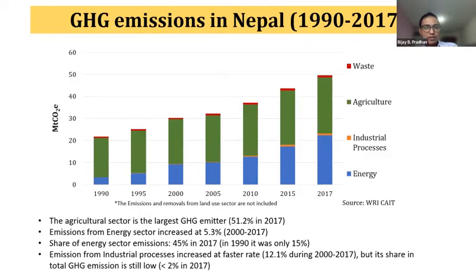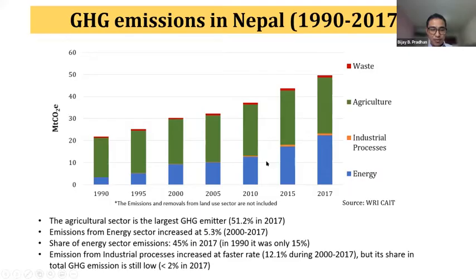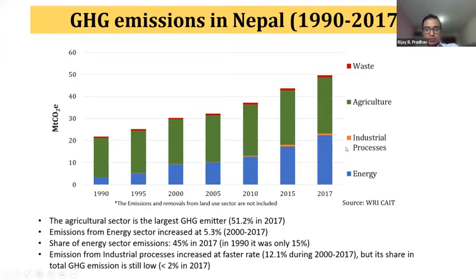The graph here shows the GHG emissions in Nepal during 1990 to 2017. You can see that the agriculture sector is the largest GHG emitter - it had a huge share in GHG emissions in 1990 and still has more than 50% in 2017. But the emissions from the energy sector have been increasing at a rapid rate - the average increase was 5.3% during 2000 to 2017. From this trend, we can say that soon energy emissions will surpass agriculture sector emissions.